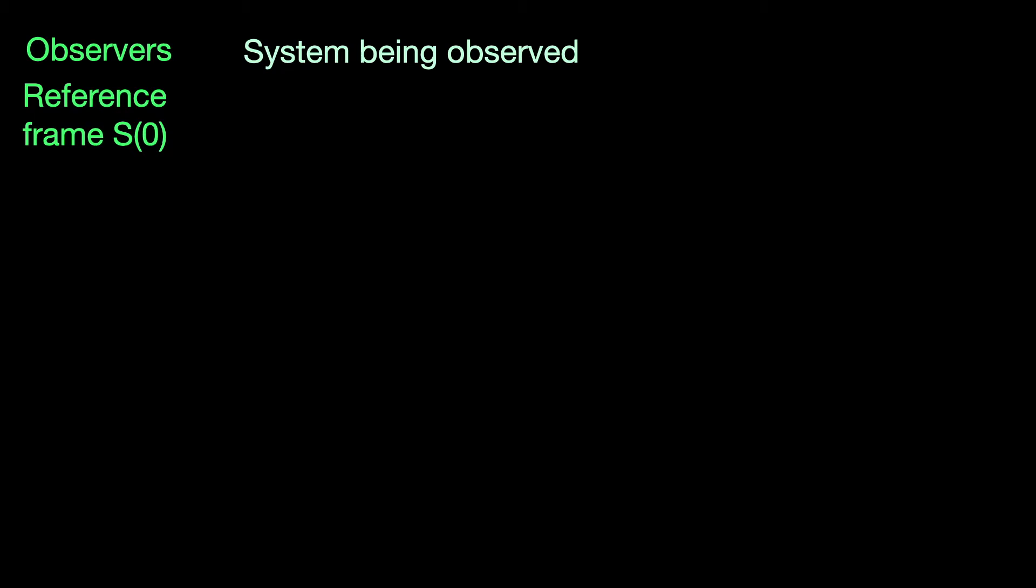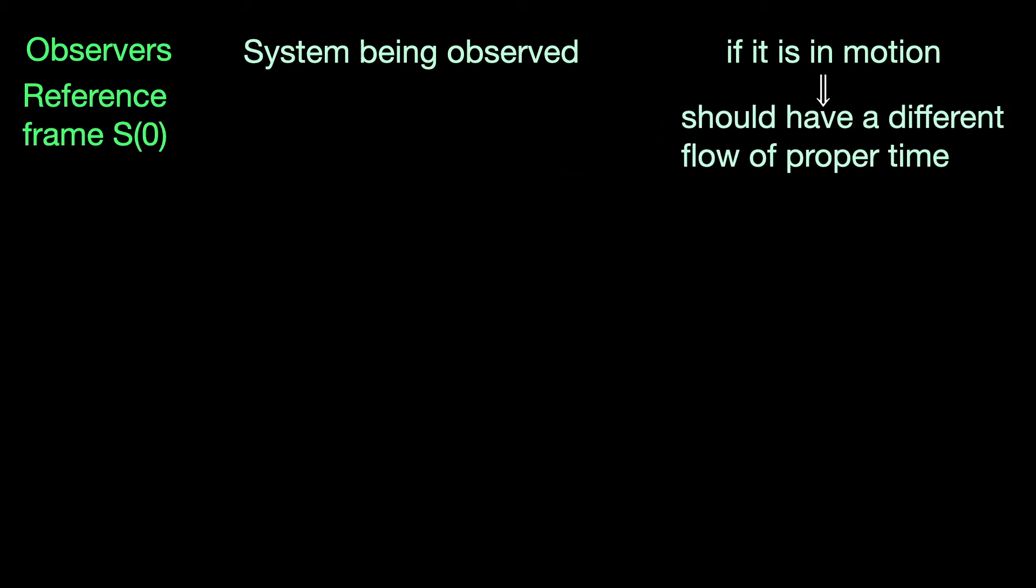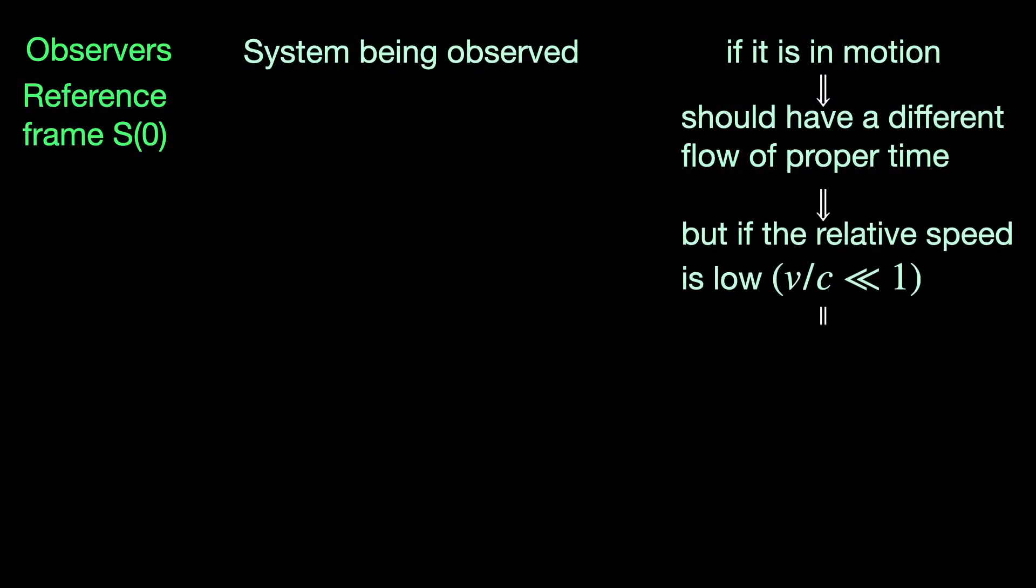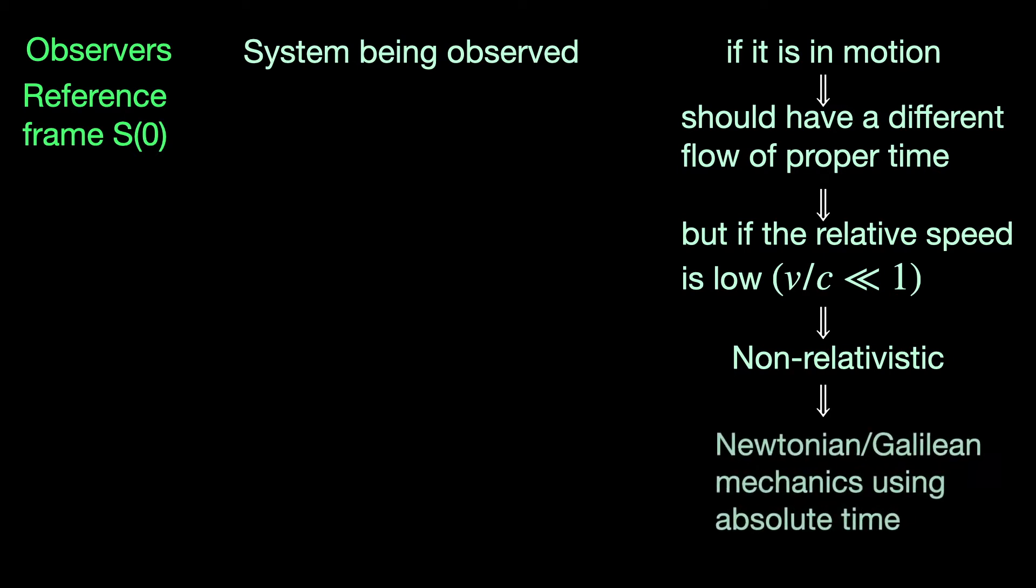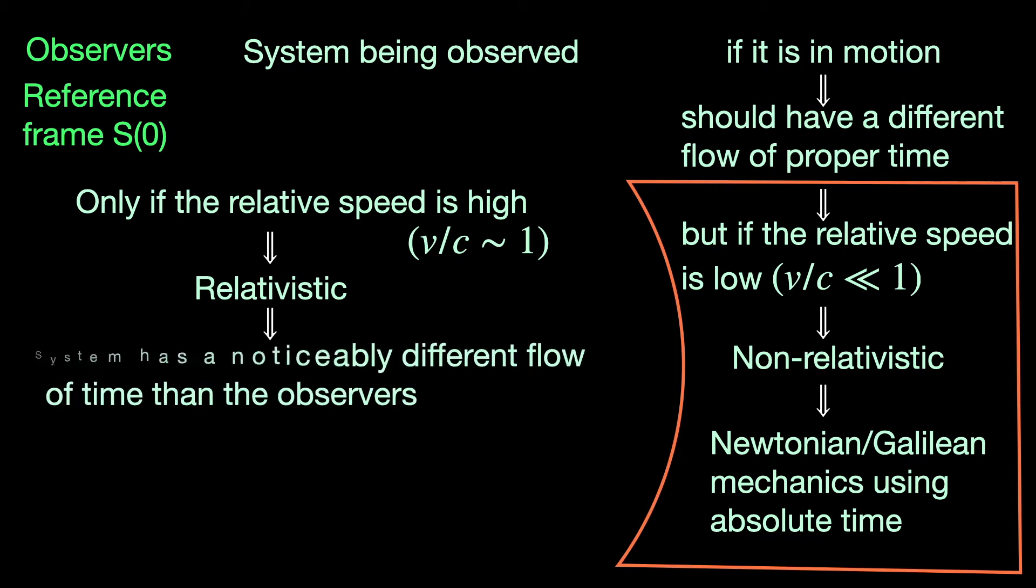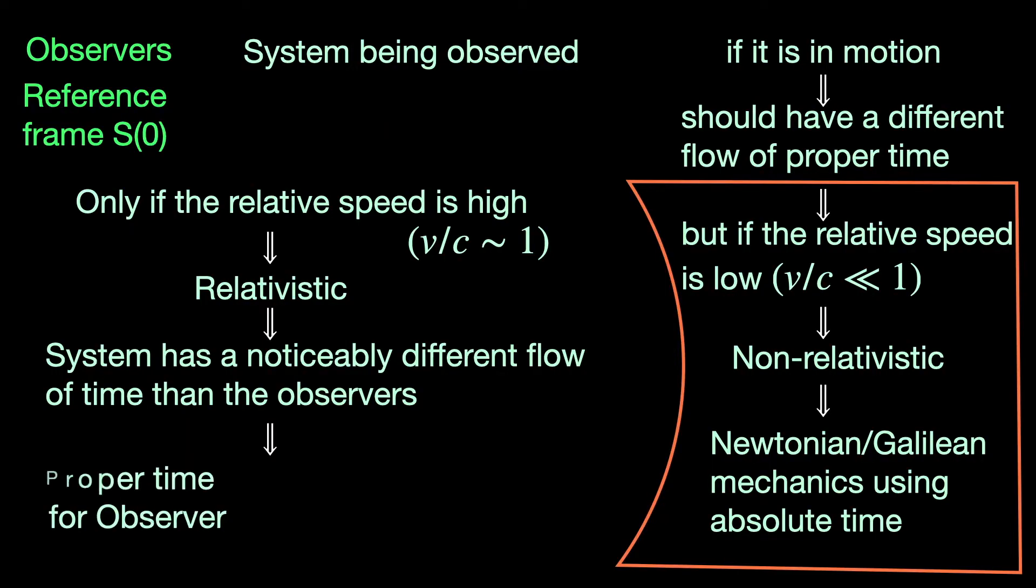Sometimes, the system being observed is in motion with respect to us observers and according to special relativity should experience a different flow of time than what we experience. But more often than not, the relative speed is so small compared to the speed of light that this difference goes completely unnoticed. In that case, we say we are dealing with a non-relativistic system and fall back to our good old Galilean or Newtonian framework of absolute time. Only when the relative speed is extremely high and becomes a sizable fraction of the light speed, we say that we are dealing with the so-called relativistic system. In this case, we cannot ignore the difference in the time experienced by the system and that experienced by ourselves any longer, and we have to reject the Galilean or Newtonian notion of an absolute time and deal with two different proper times, one for the observer and another for the system being observed.